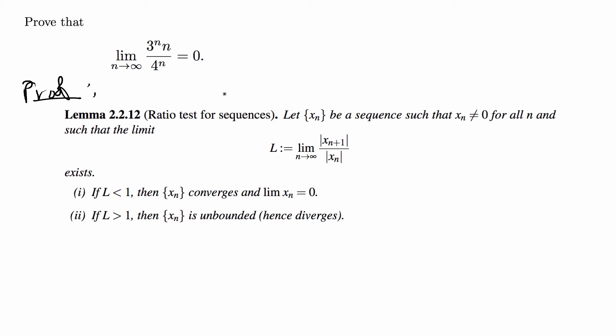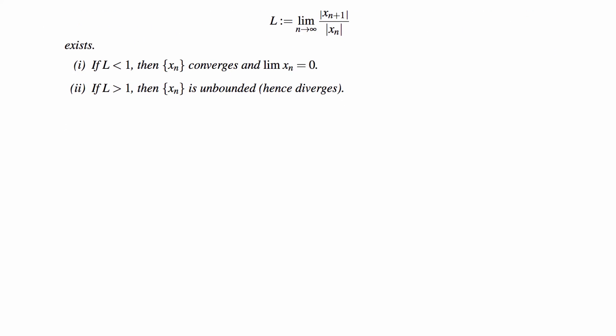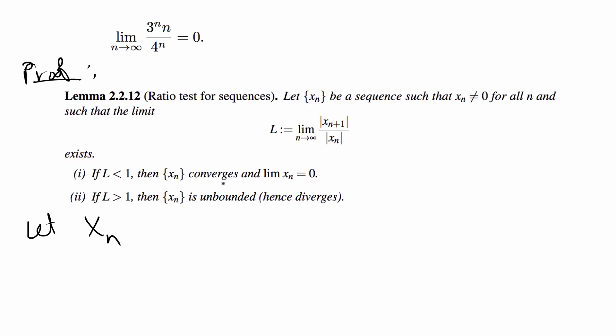Okay, so we can use this because x_n does not equal 0 for all n, so that's the first thing we're going to say in the proof. So we're going to let x_n be equal to the sequence that we were given, which is 3 to the n over n times 4 to the n. Then x_n is greater than 0 for all n in the naturals.